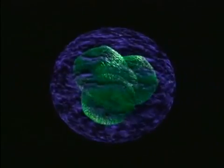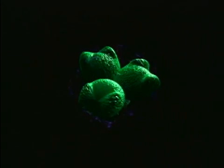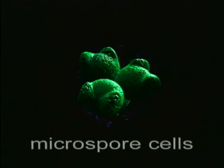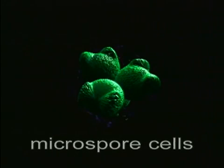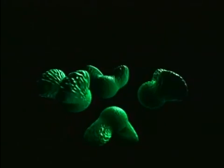Each nucleus becomes surrounded by a wall that begins to enlarge at two points. The resulting microspore cells remain attached to one another and are known as a tetrad. The wall outgrowths develop into enlarged, gas-filled structures called wings.